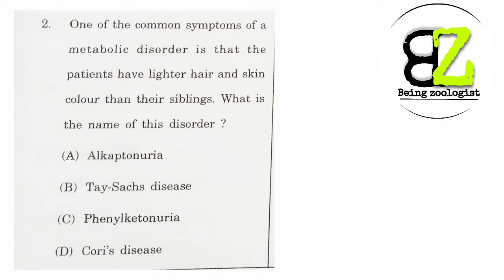Next question: one of the following symptoms of a metabolic disorder is that the patient has lighter hair and skin color than their siblings — what is the name of the disorder? According to me, the answer should be phenylketonuria, that is option C. Although alkaptonuria also shows lighter skin, I think phenylketonuria is correct because it disrupts melanin pigment synthesis.